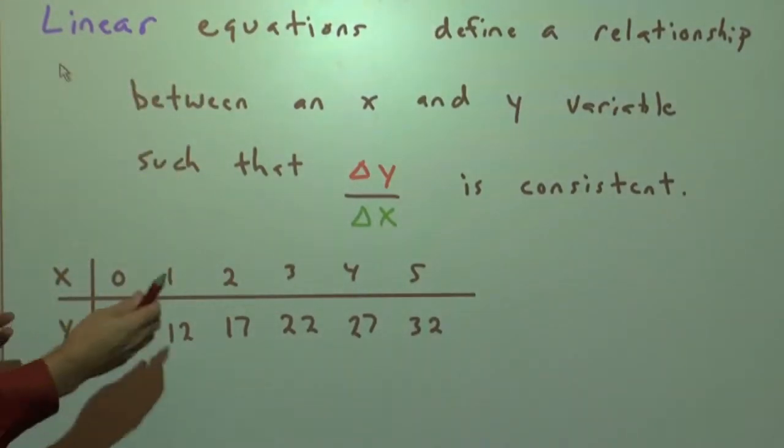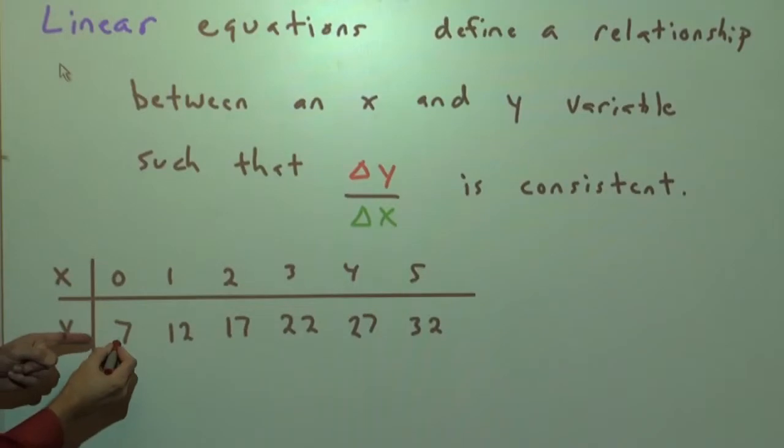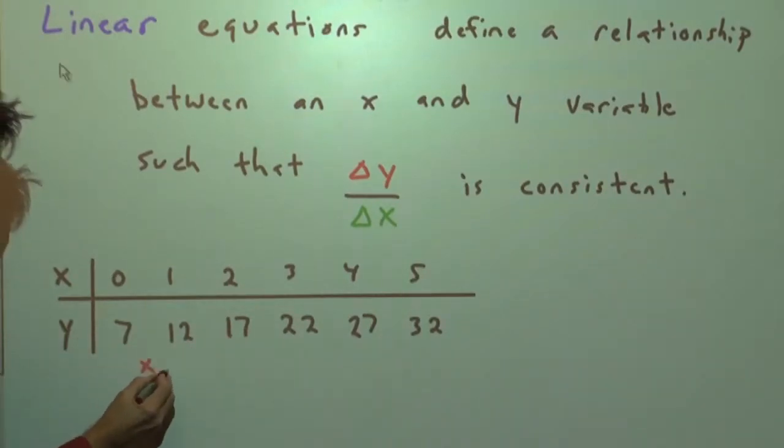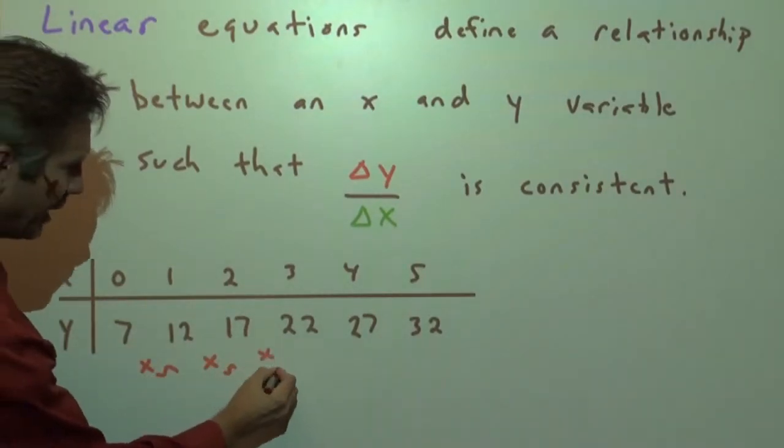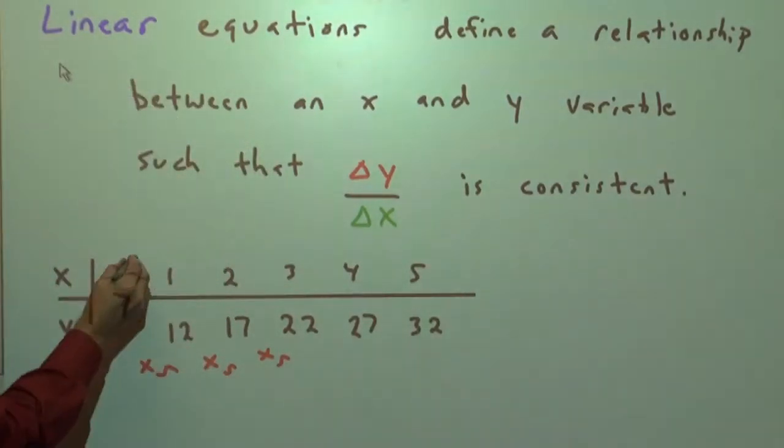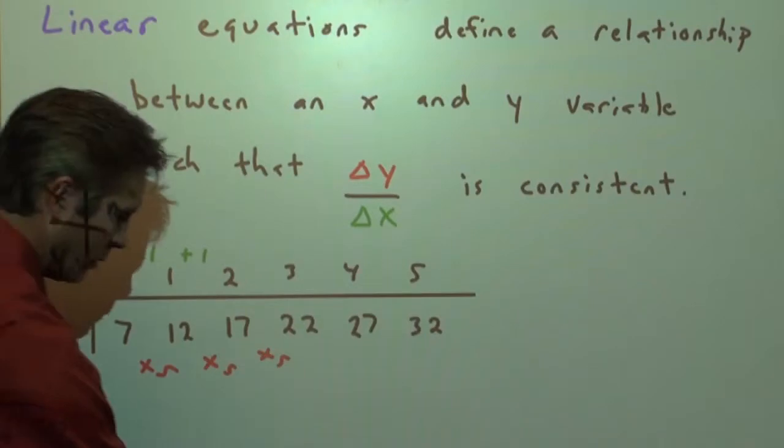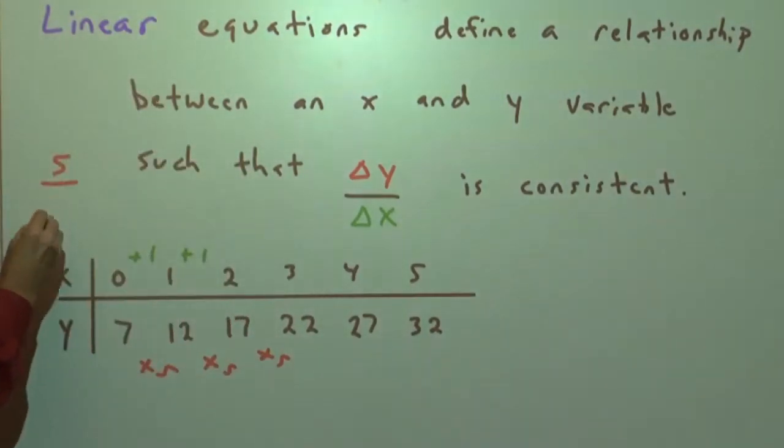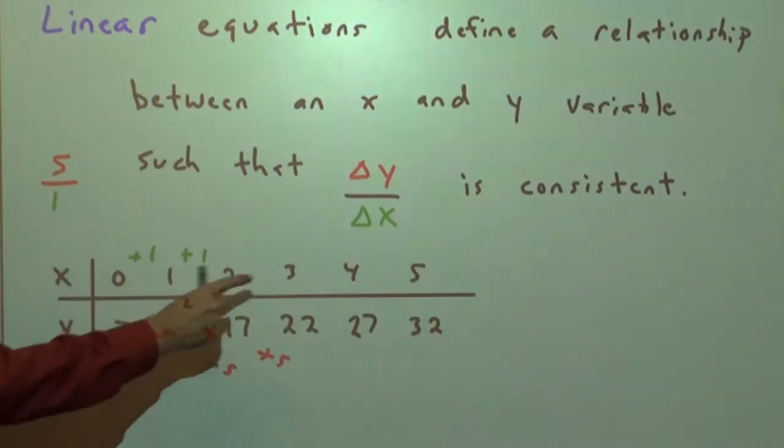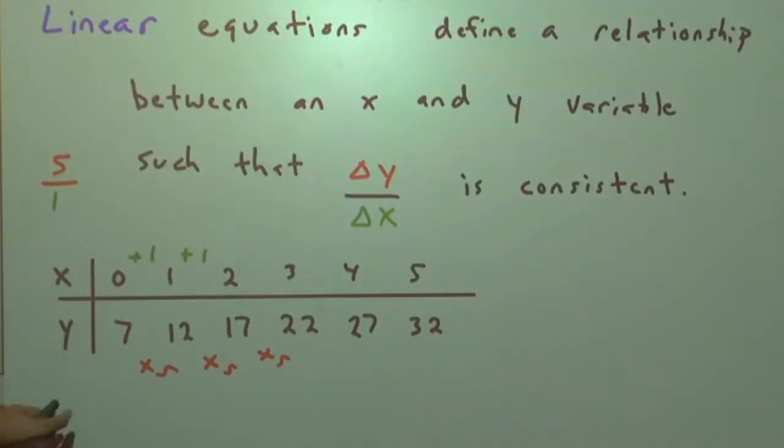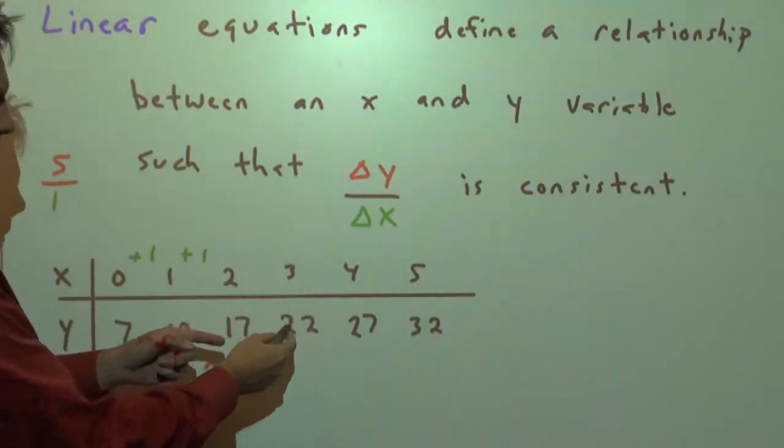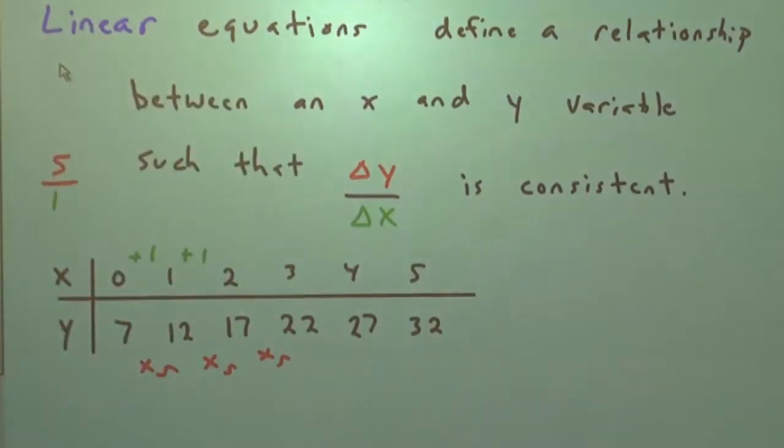If you look at this table of values for points that are on a line, when you look at how the y's are changing, they're going up by 5, plus 5, plus 5, plus 5. When you look at how the x's are changing, they're going up by 1's. So the slope for this line must be the change in y over the change in x, which is 5 over 1. Since that's consistent from ordered pair to ordered pair, this is a linear relationship. That's what makes it linear.